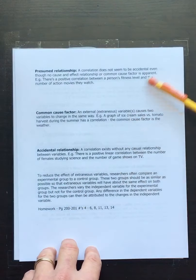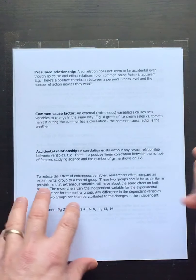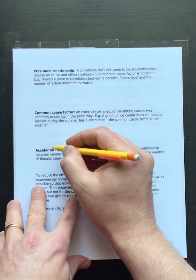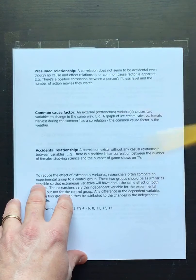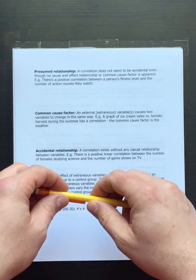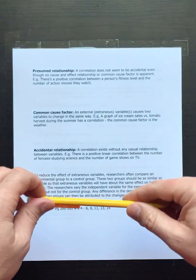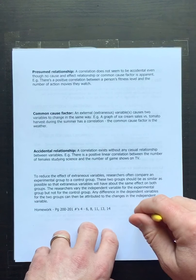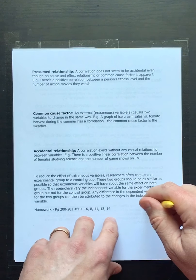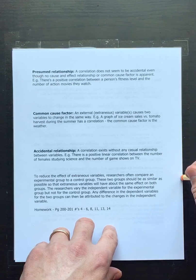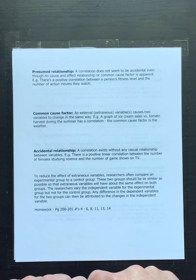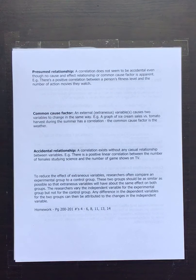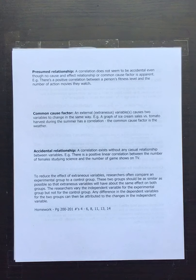There are also presumed relationships and common cause factor relationships. In a presumed relationship, you would think that a change in x causes a change in y, but there could be many other factors that play a role. Going back to hours studied and test performance — if the study time is before the test — there are all kinds of other factors at play.